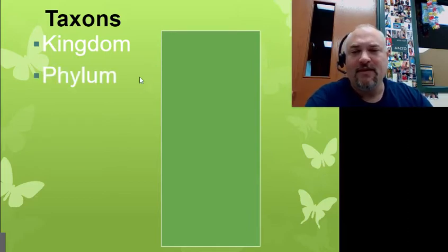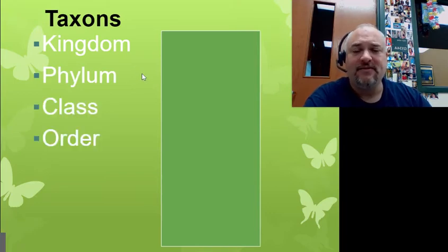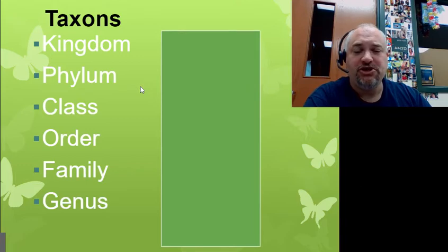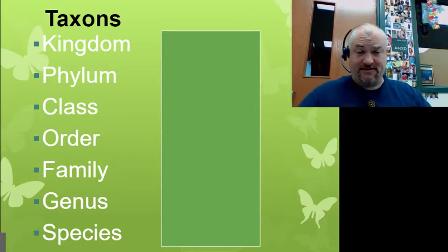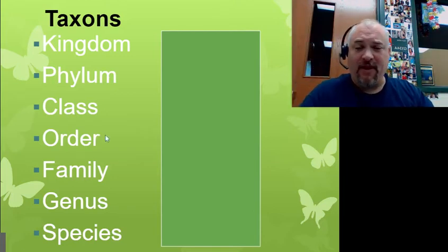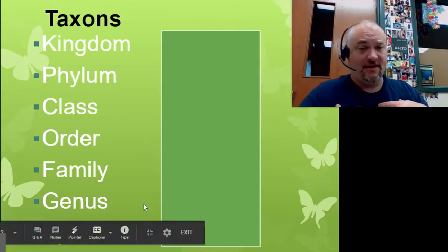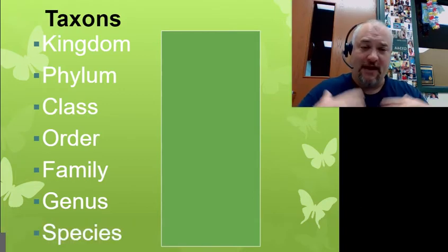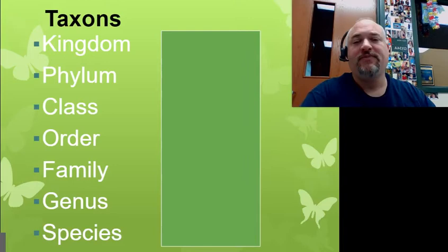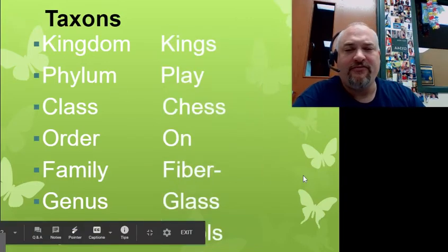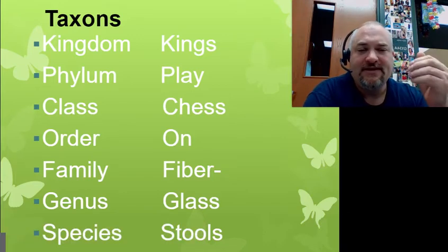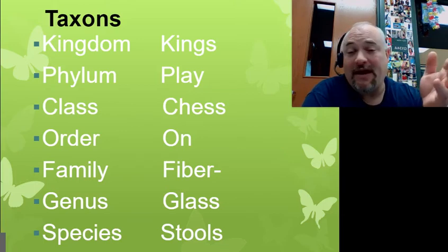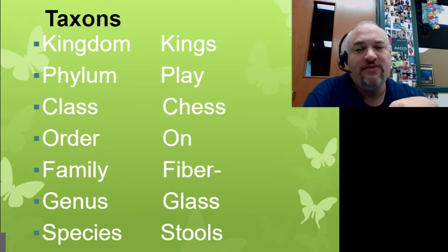In taxonomy we use things like kingdom, phylum, class, order, family, genus, and species. Kingdom you've probably all heard before — we are part of the animal kingdom. And you've probably heard of species before — our species is humans. The ones in between, maybe you haven't heard of, but here's a way to remember the order of these different taxons: 'Kings play chess on fiberglass stools.' That is how I learned it in high school and I remember it to this day.